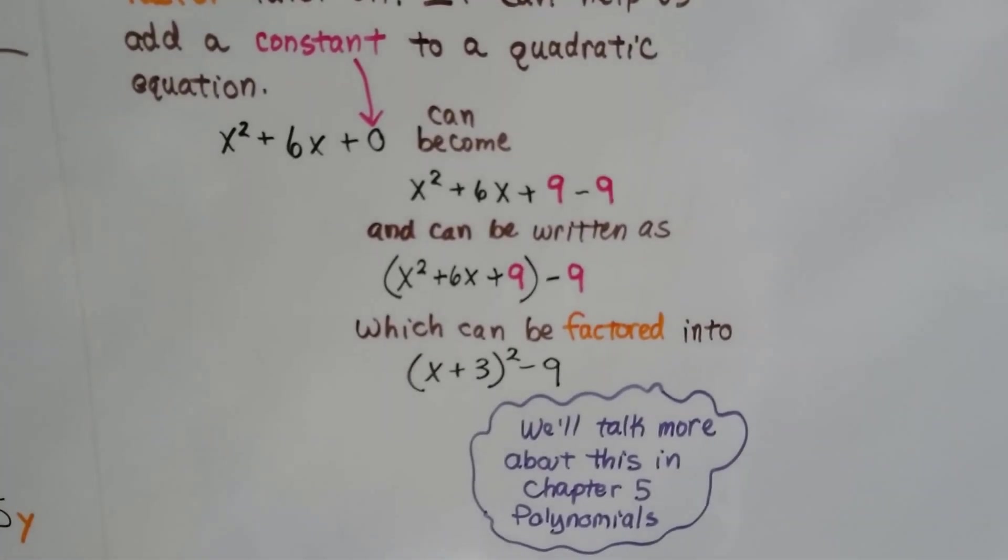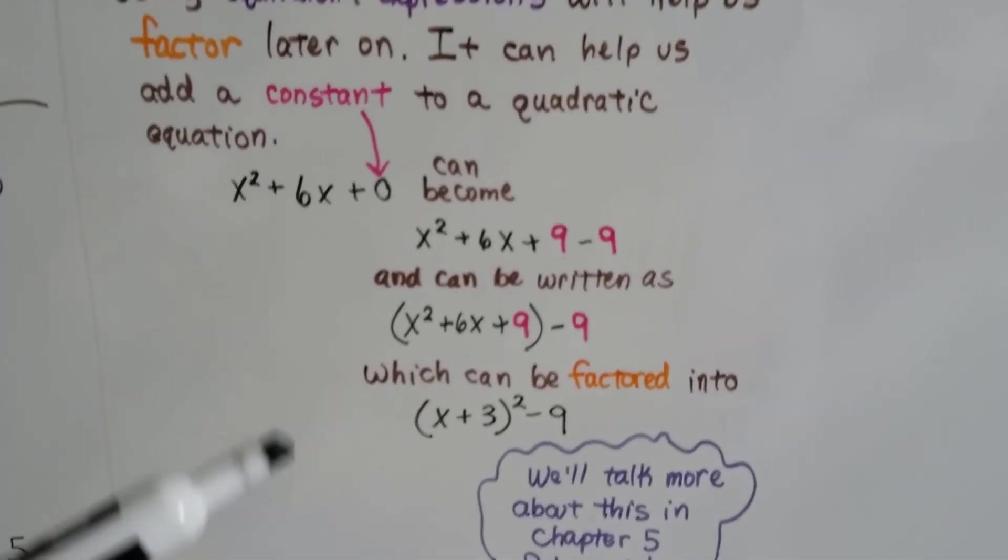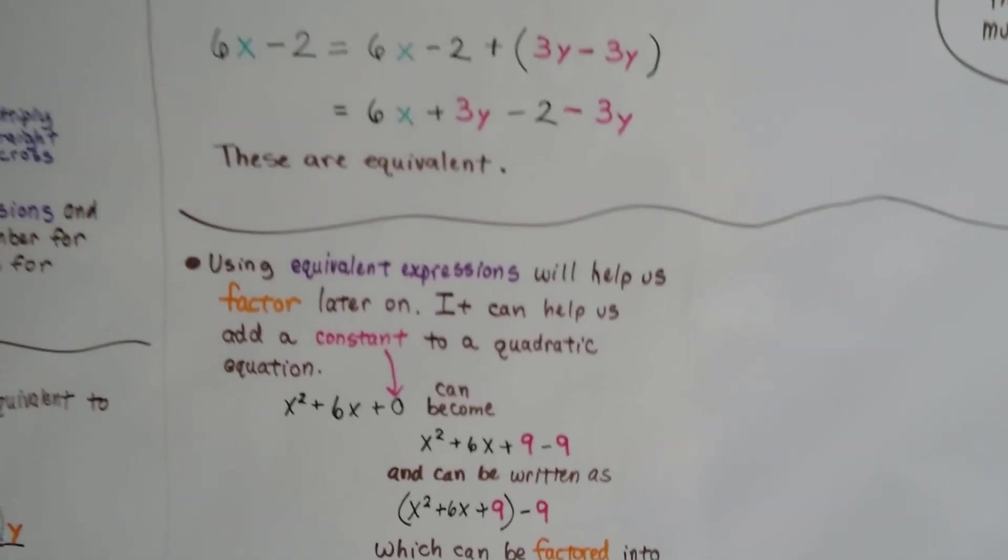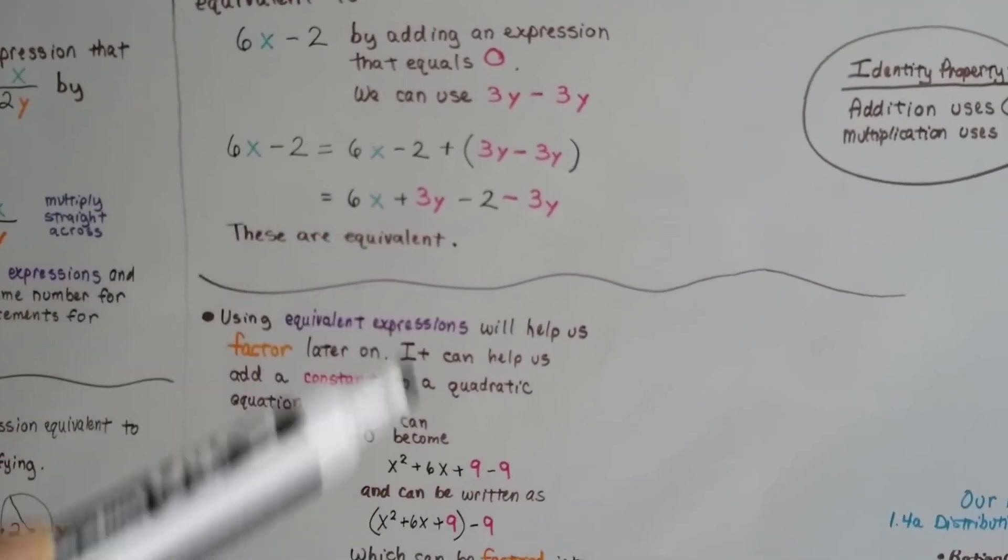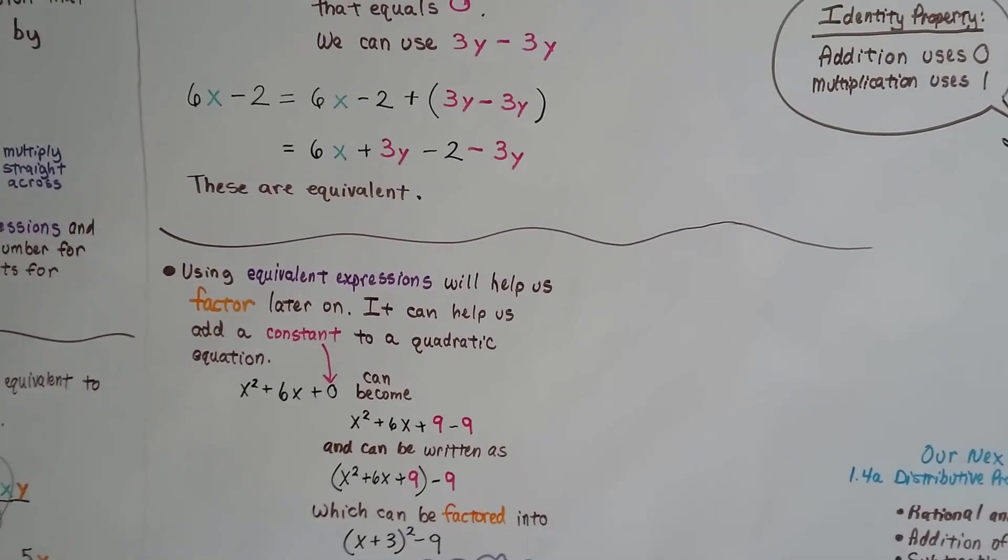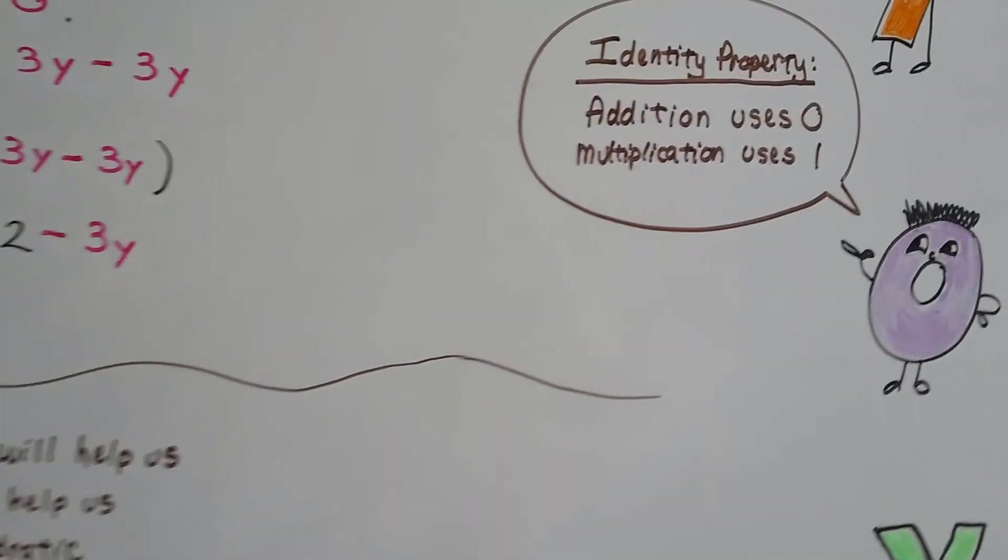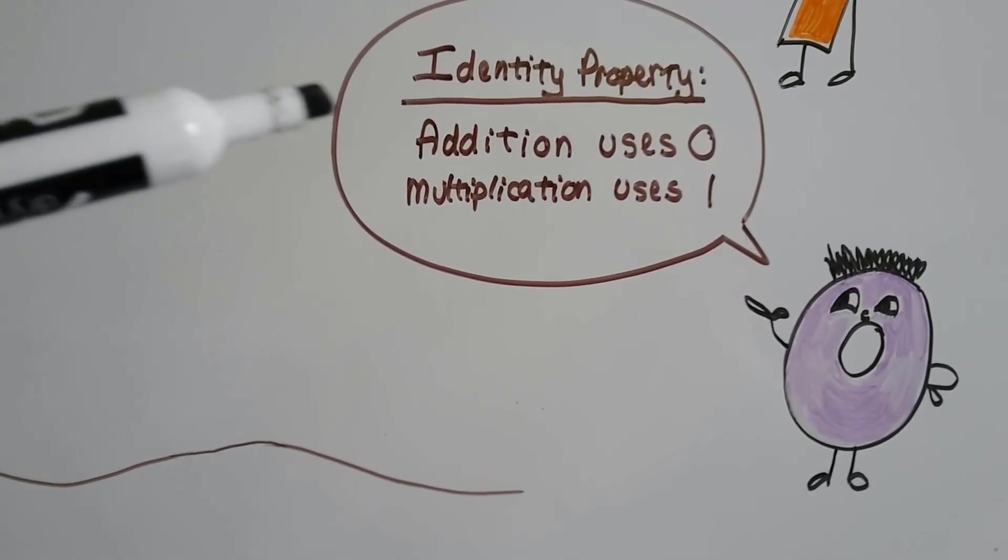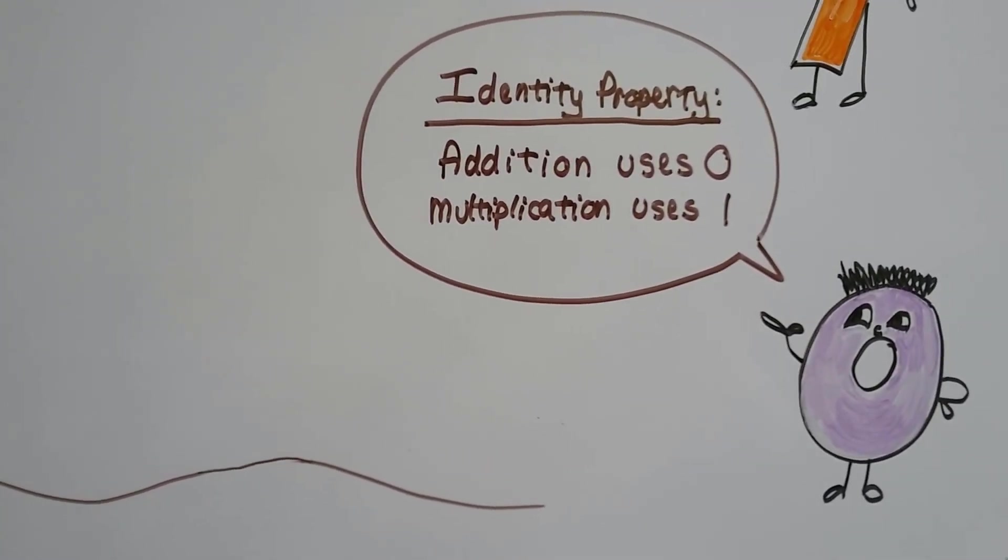We're going to talk more about that in Chapter 5. We're only in Chapter 1. But by using equivalent expressions, we can add an expression that equals 0 to help us later on, even in factoring. The identity property for addition uses 0, and multiplication uses 1.